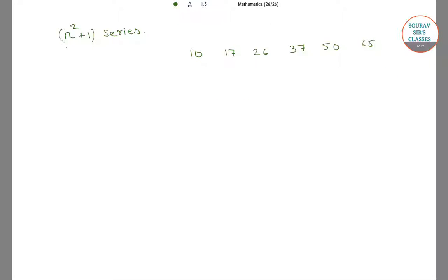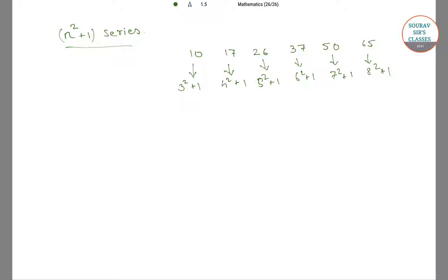The first one is the n squared plus 1 series. In this series, as we can see, each number can be written in the form of n squared plus 1. Here, 10 equals 3 squared plus 1, 17 equals 4 squared plus 1, 26 equals 5 squared plus 1, 37 is 6 squared plus 1, 50 is 7 squared plus 1, and 65 is 8 squared plus 1.